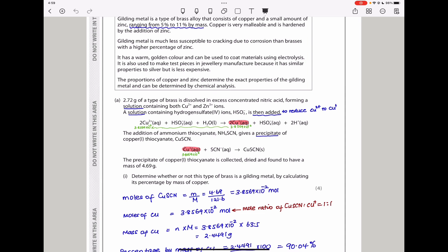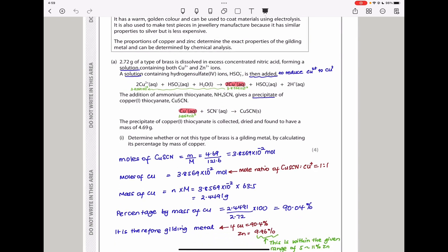2.72 grams of a type of brass is dissolved in excess concentrated nitric acid, forming a solution containing both copper(II) and zinc(II) ions. A solution containing hydrogen sulfate ions is then added to reduce copper(II) to copper(I). The addition of ammonium thiocyanate gives a precipitate of copper(I) thiocyanate. The precipitate is collected, dried, and found to have a mass of 4.69 grams.